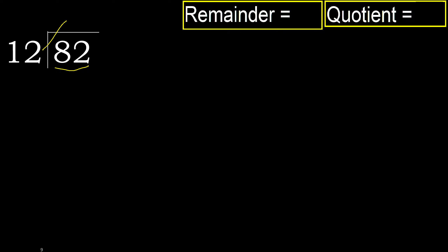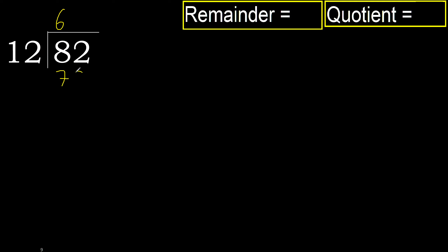Multiply 12 by which number is nearest to 82 but not greater. 12 multiply by 8 is 96, which is greater. Multiply by 7 is 84, which is greater. Multiply by 6 is 72, which is not greater.